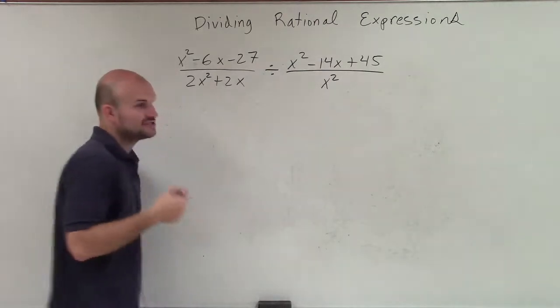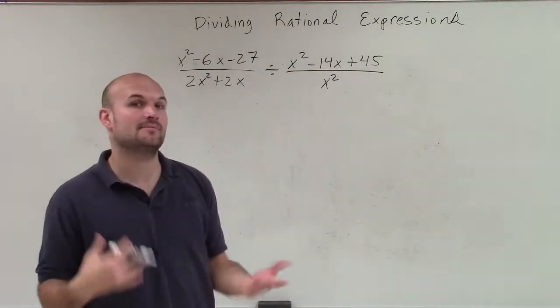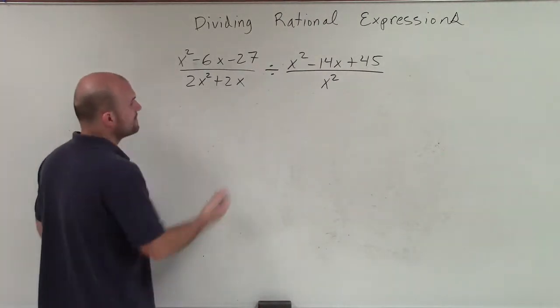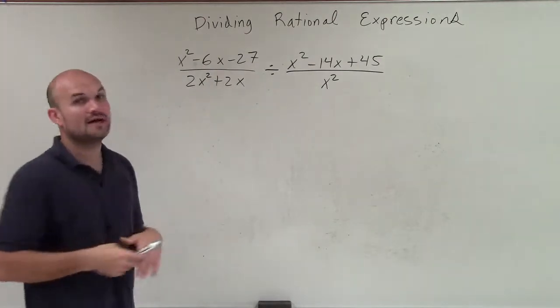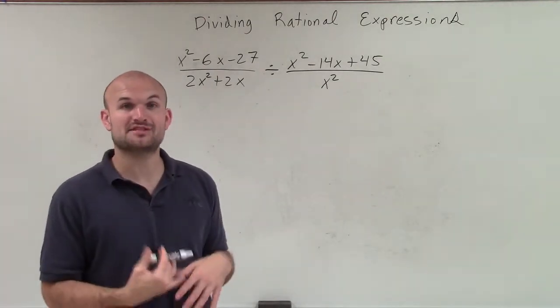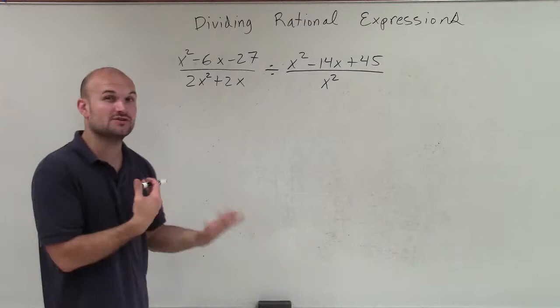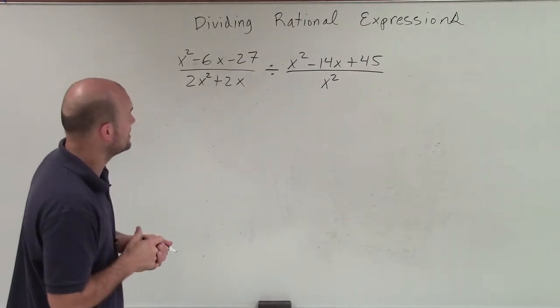So we see we have a couple trinomials. On these trinomials, we're going to have to be able to factor them. And I'll do this in my head, but I'll talk my way through it. I see that I have a binomial here. And on this binomial, I see I have some common terms so I can factor out the GCF. So we're going to use a couple different factoring techniques to be able to get this done.